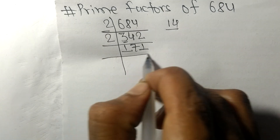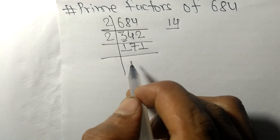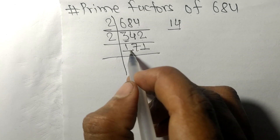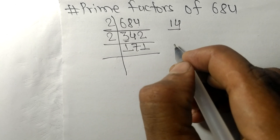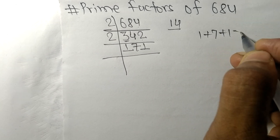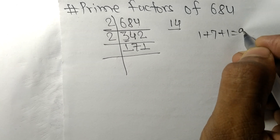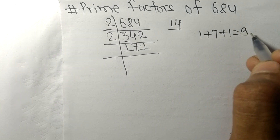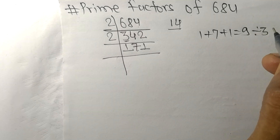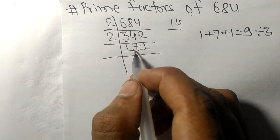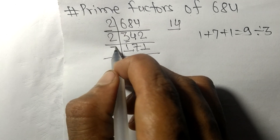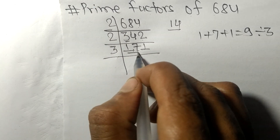So now we got 171. When we add all these digits — 1 plus 7 plus 1 — we get 9, and 9 is exactly divisible by 3, so 171 is also divisible by 3.